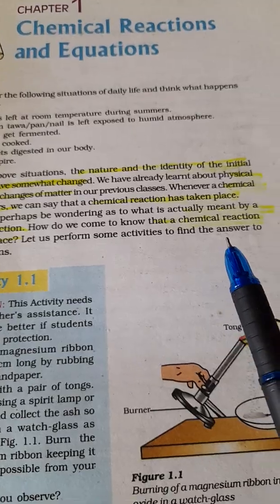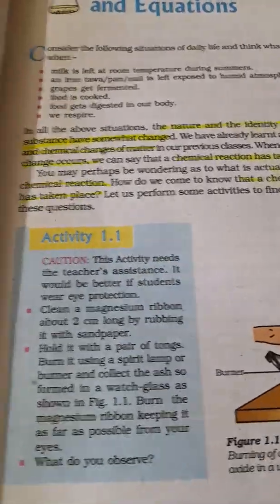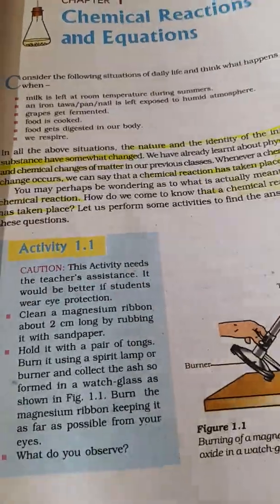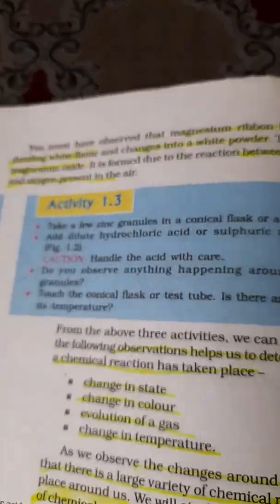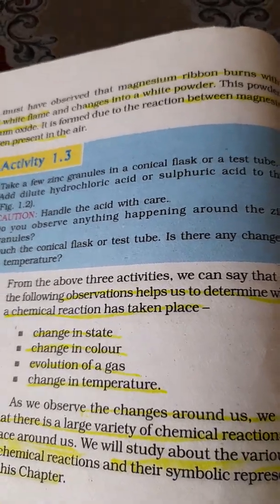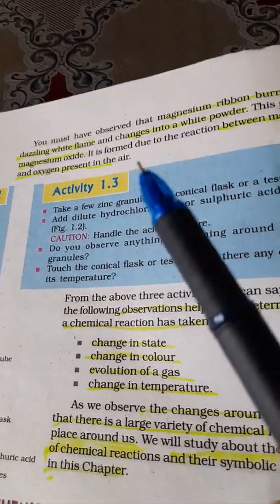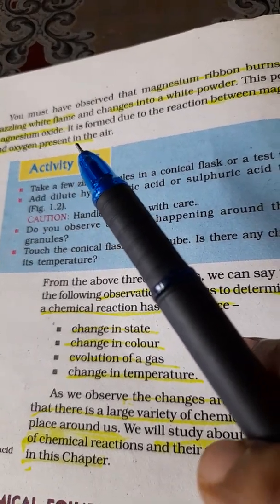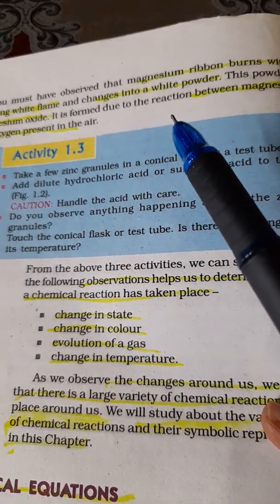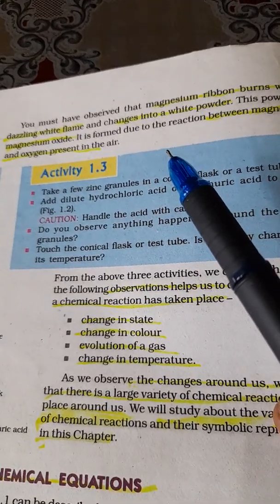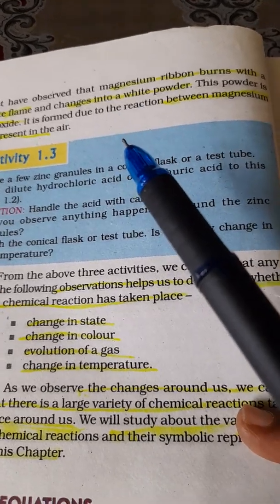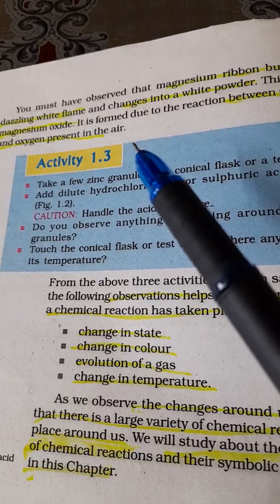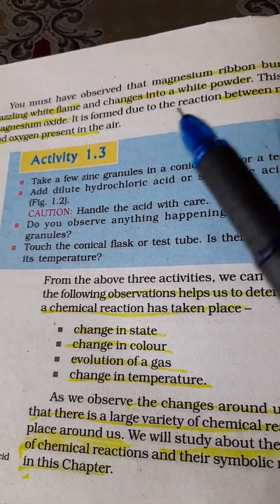How do you come to know that a chemical reaction has taken place? You might have seen magnesium ribbon when you burn it - it burns with a very bright white flame and turns into a white powder called magnesium oxide. The magnesium ribbon reacts with oxygen present in the air and changes to white magnesium oxide powder.